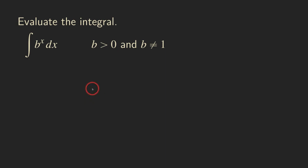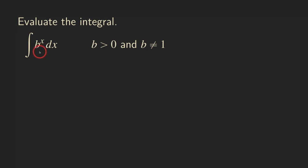Hello everyone, let's integrate a more general exponential function. As you can see here, I put the base as b, so b to the x, and we want to integrate this function. In order for this to be an exponential function, b must be a positive number, and b cannot be equal to 1. Because if b equals 1, it becomes a constant function. Also, b can be e, which goes back to the natural exponential function e to the x. And the question is: what is the antiderivative of an exponential function that's not base e?